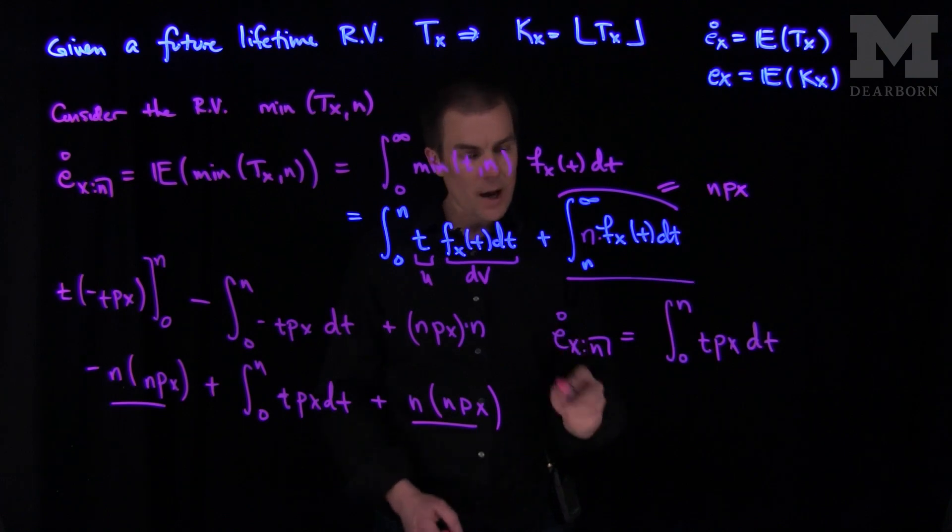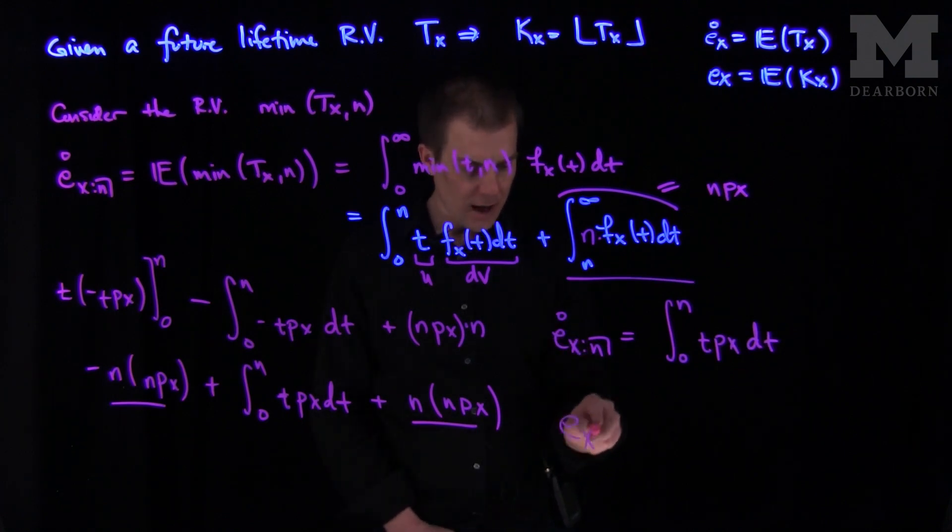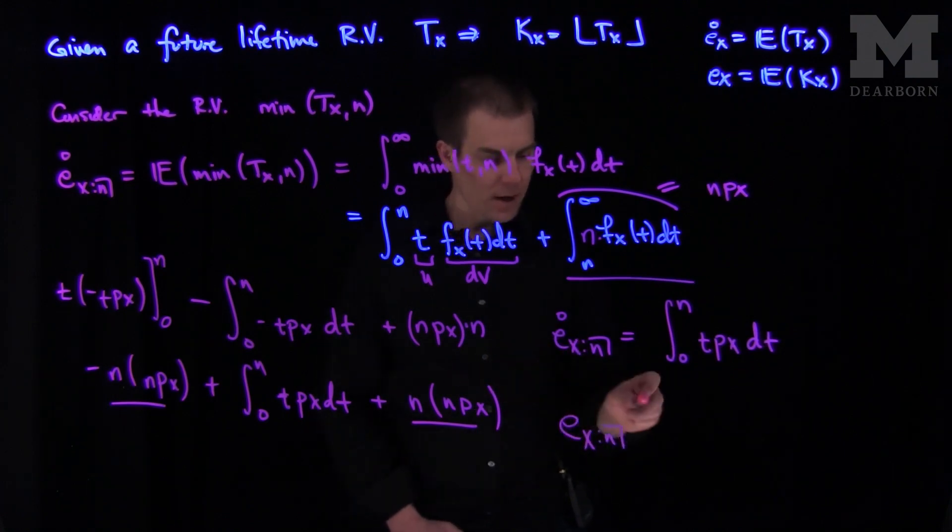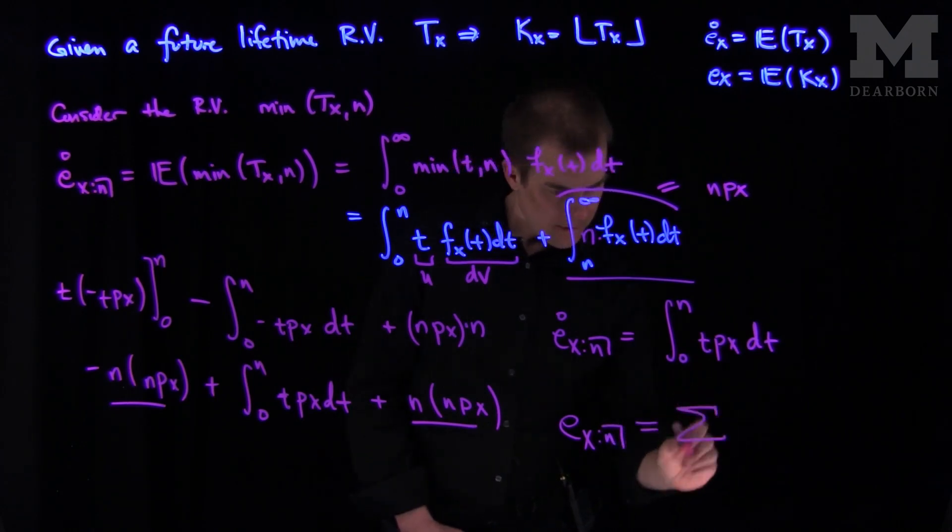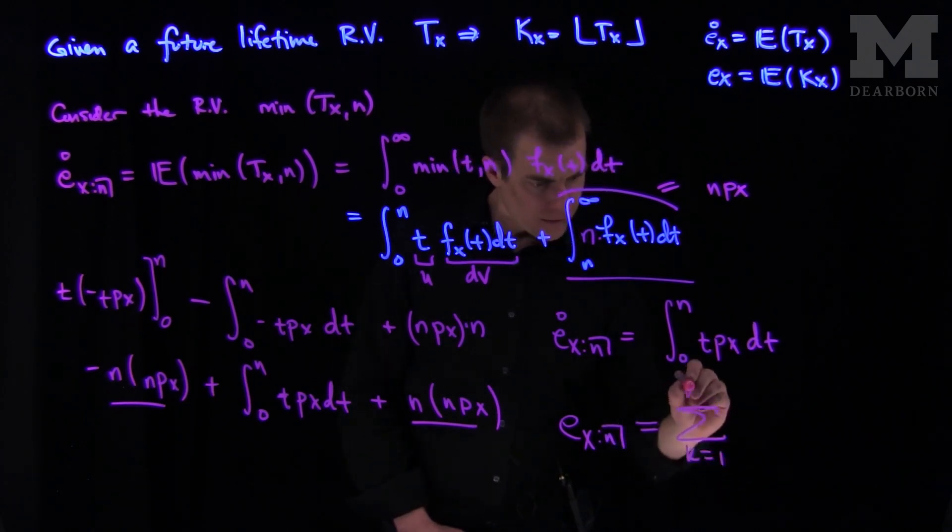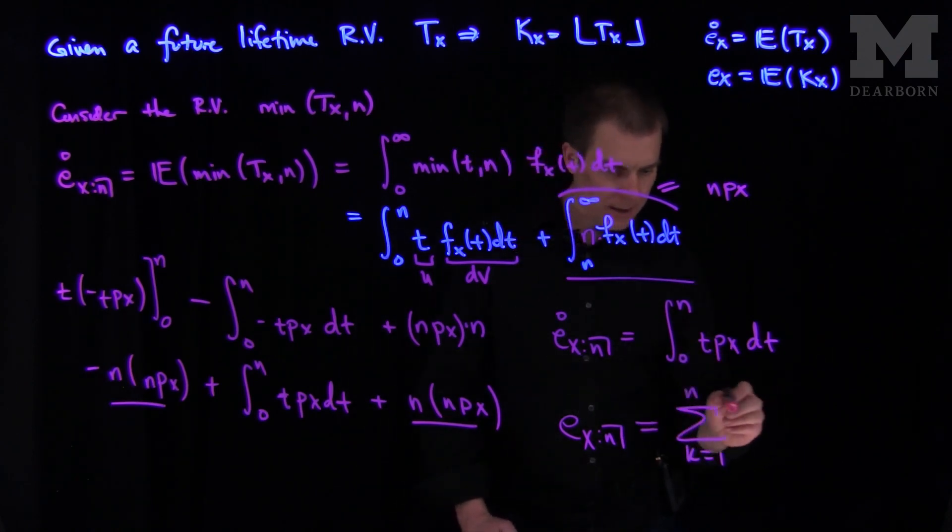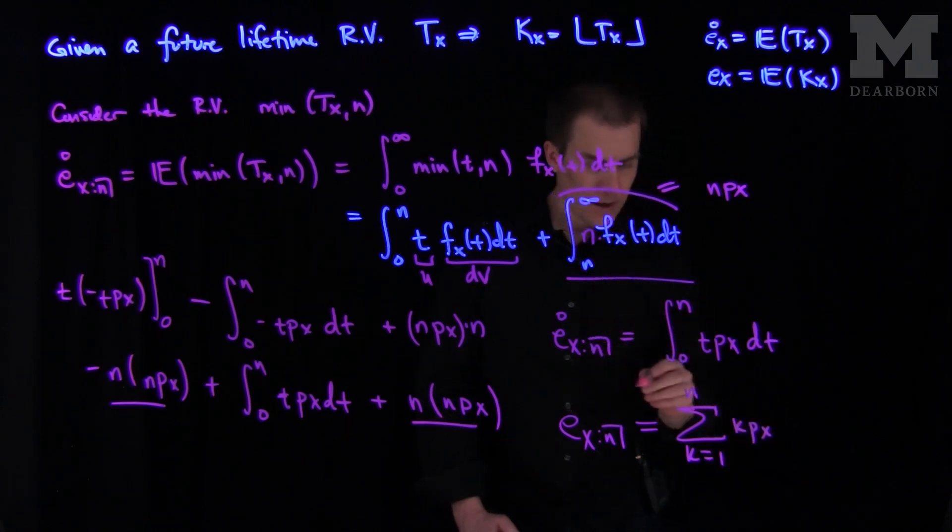We can see a similar formula is true without the circle. We can see that ex n, the capped life, the minimum of those two things, is exactly equal to the sum k goes from one up to n of k px.